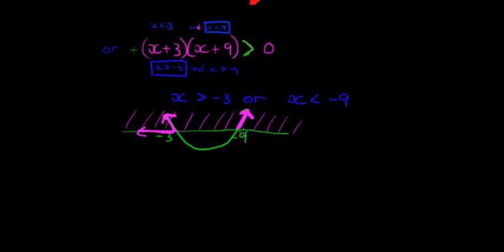And if I'm working with the outside legs, it means I'm working with the outside limits. I'm working with greater than... sorry, smaller than negative 3 and greater than negative 9. So they're not included because my original sign did not include 0.